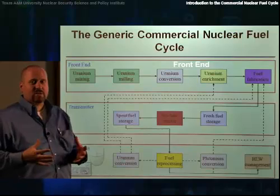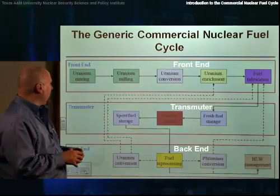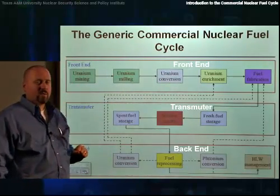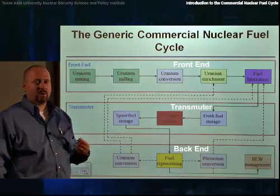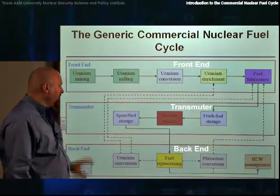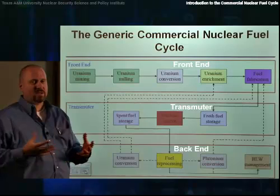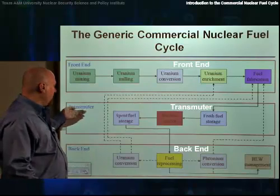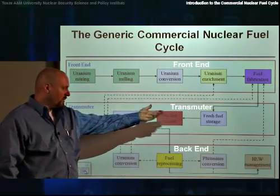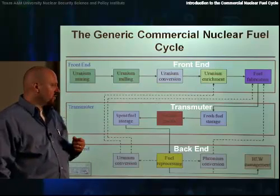This is your basic generic commercial nuclear fuel cycle. The basic structure includes a front end, which deals with the material that is mined out of the earth and then processed to produce fuel for a nuclear reactor. The nuclear reactor area is sometimes referred to as the transmuter — that's just a fancy term for a nuclear reactor. A transmuter transmutes that material radiologically, changing some of the isotopes to other isotopes, and in doing that releases energy that can then be used for peaceful purposes.